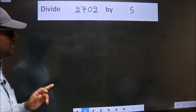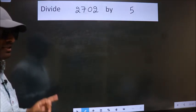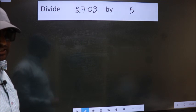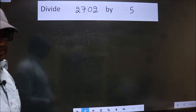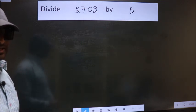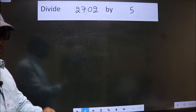Divide 2702 by 5. While doing this division, many do this mistake. What is the mistake that they do? I will let you know.